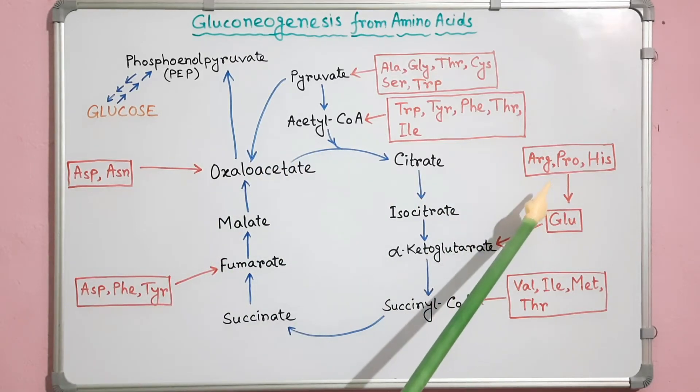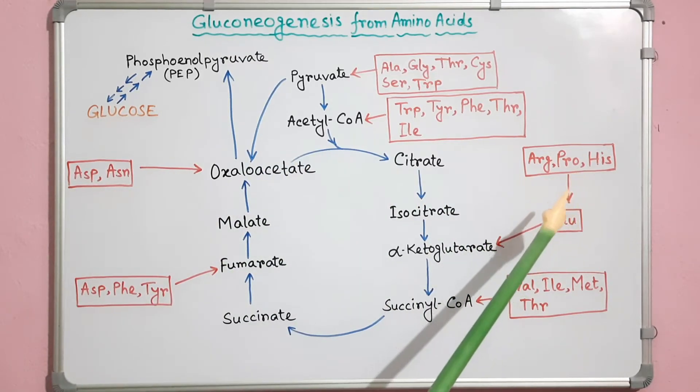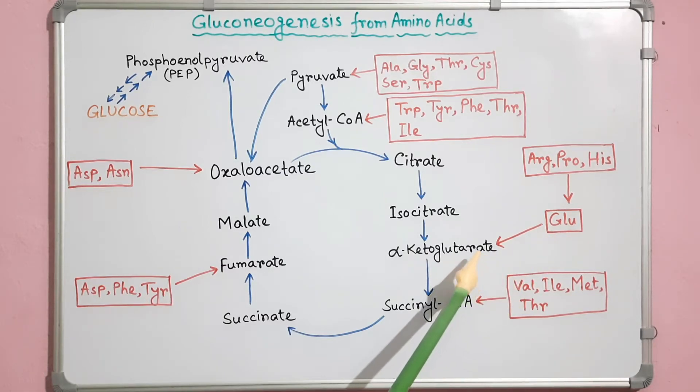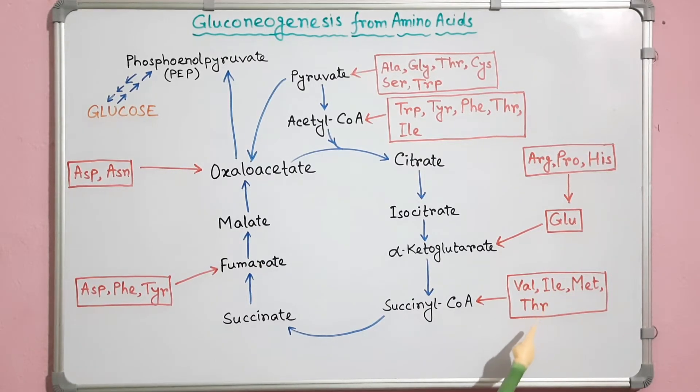Arginine, proline, and histidine can convert into glutamate. Alpha-ketoglutarate is formed from glutamate. Succinyl-CoA can form from valine, isoleucine, methionine, and threonine.